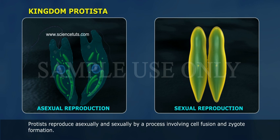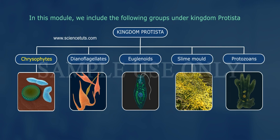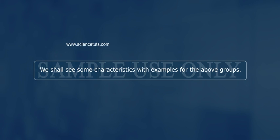Protists reproduce asexually and sexually by a process involving cell fusion and zygote formation. In this module, we include the following groups under Kingdom Protista: one, chrysophytes; two, dinoflagellates; three, euglenoids; four, slime molds; and five, protozoans.